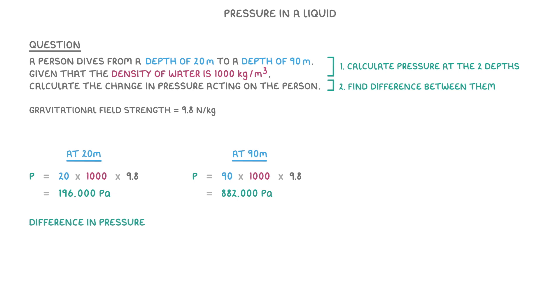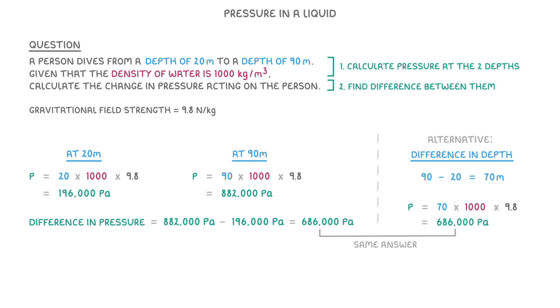So the difference in pressure is just 882,000 minus 196,000, so 686,000 pascals. Alternatively, because the difference in depth was 90 minus 20, so 70 meters, we could have just done 70 times 1000, times 9.8, and we would still have got the same answer of 686,000 pascals.